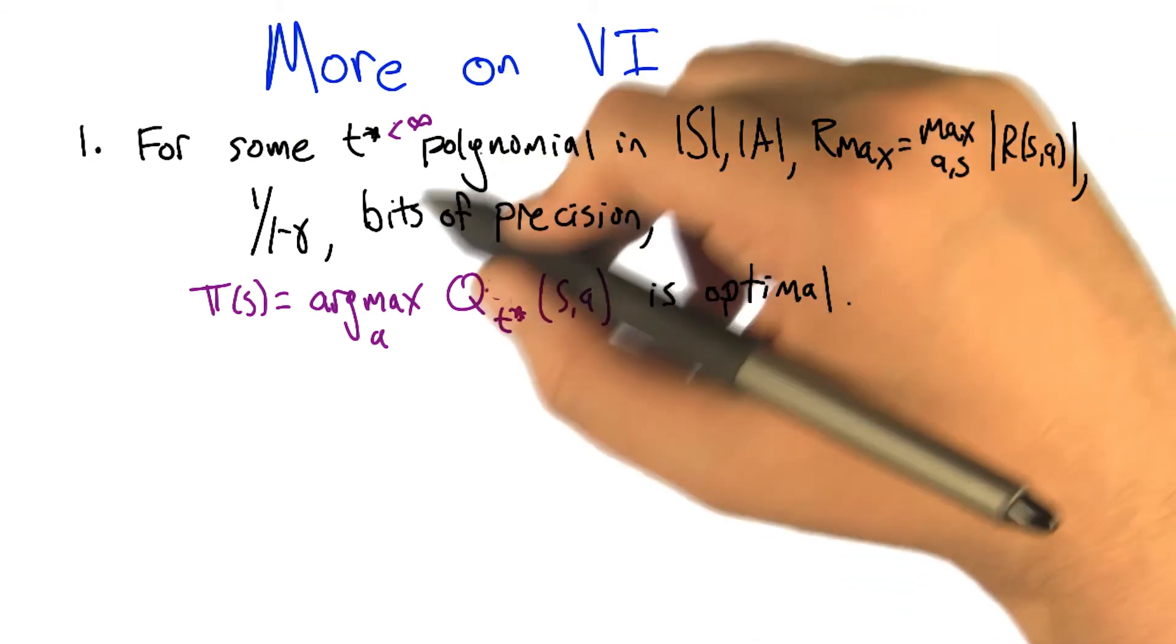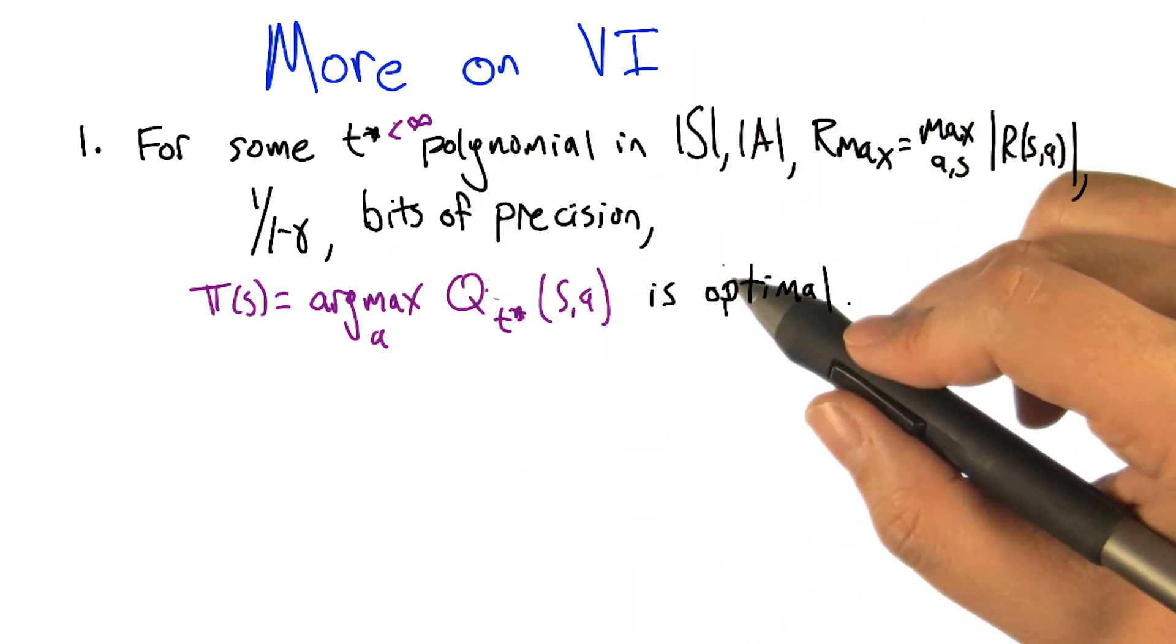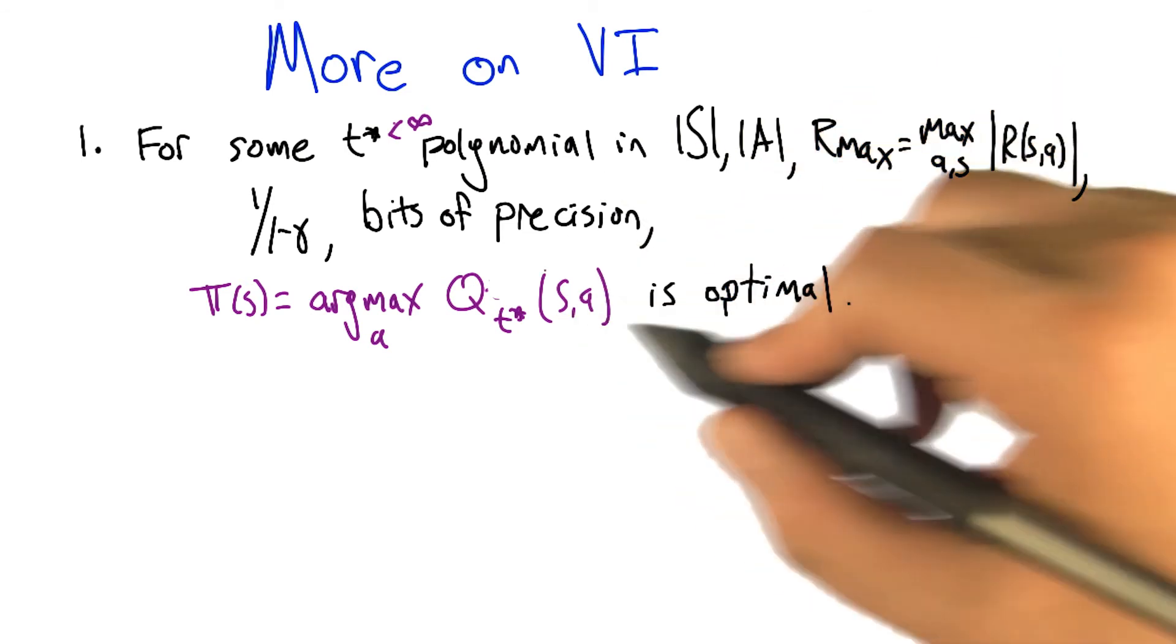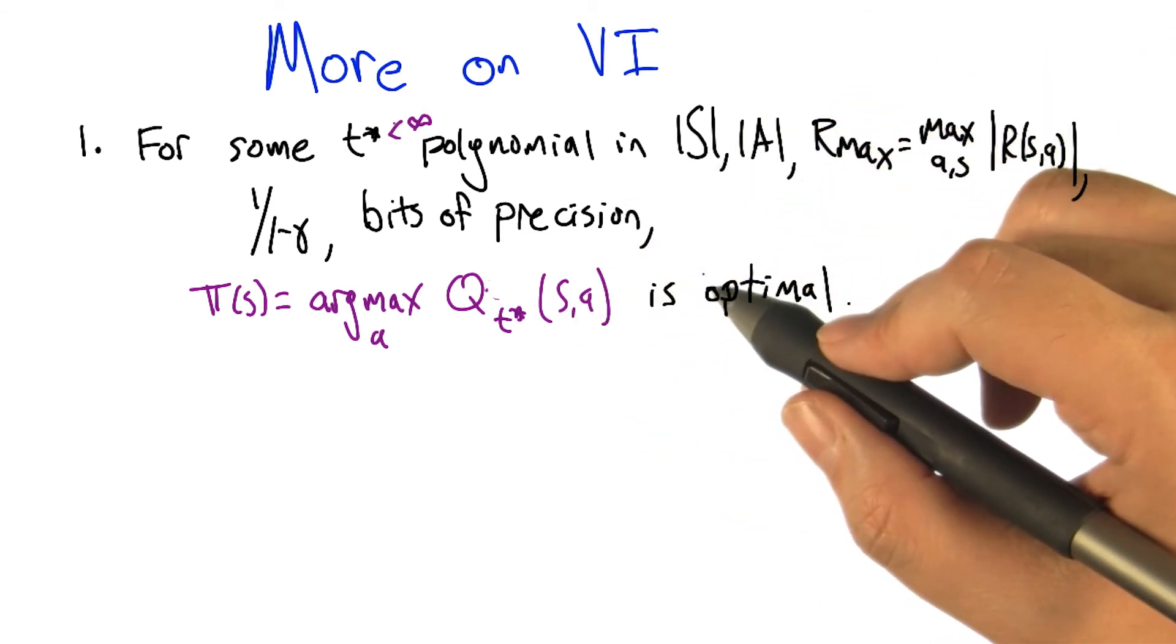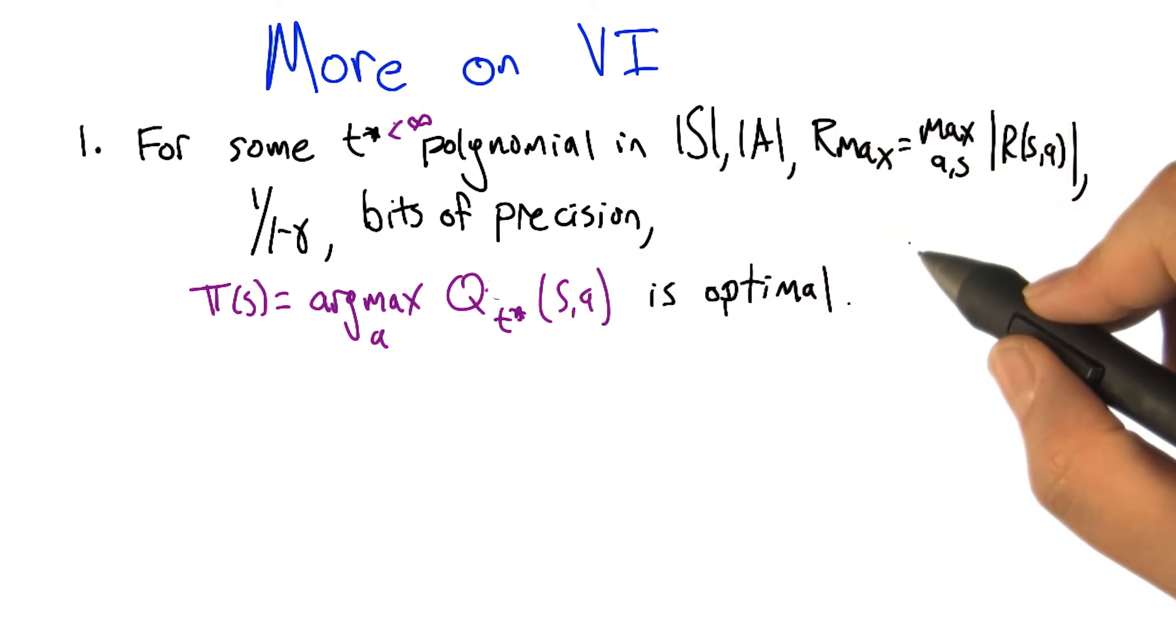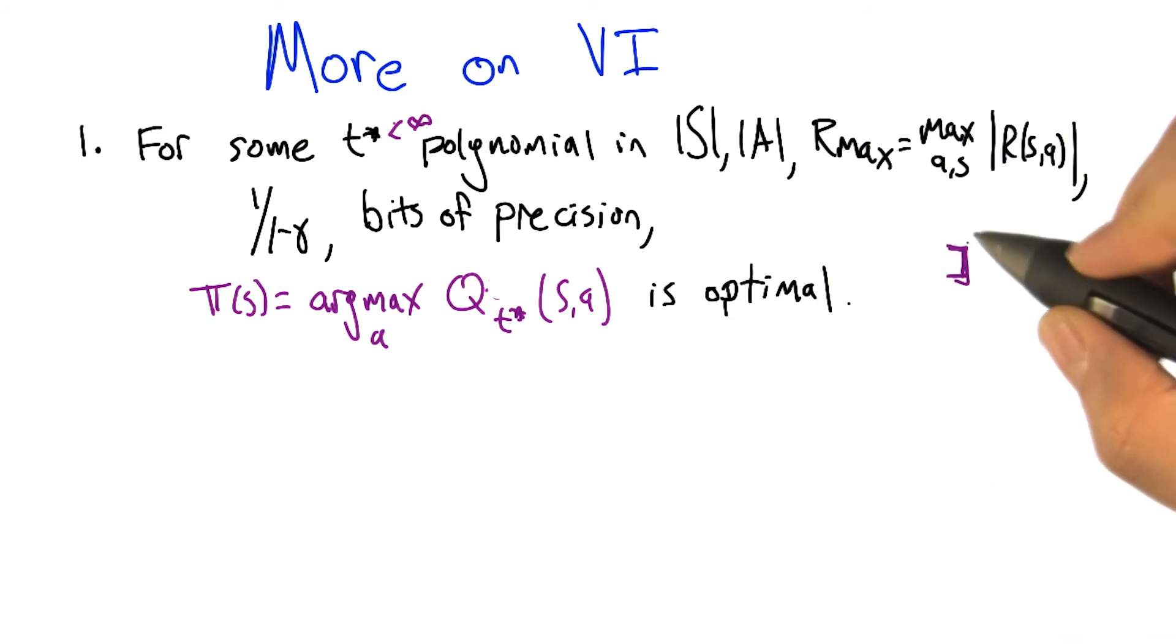So what this really boils down to is the idea that once you fix an MDP and the number of bits of precision you're using to write it down, there's going to be some optimal action. And there might be other actions tied for optimal in any given state. But the second best action is going to be some actual bounded amount away from optimal.